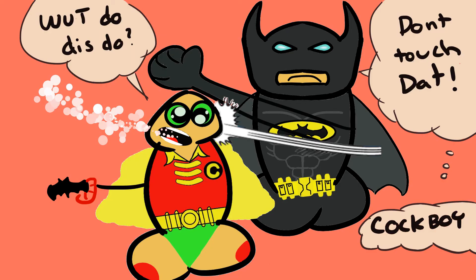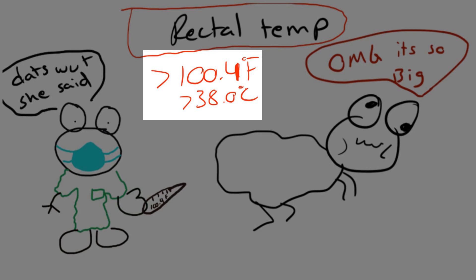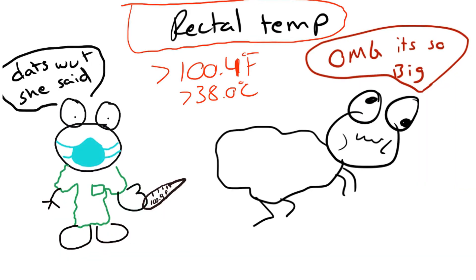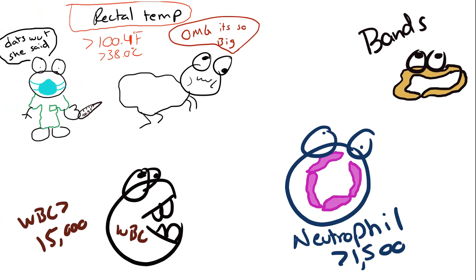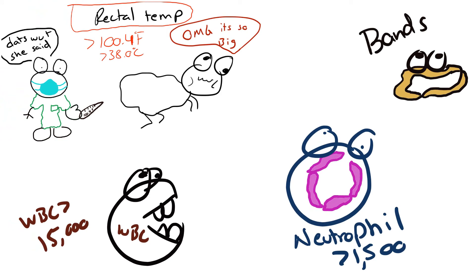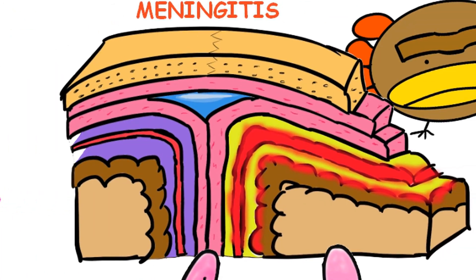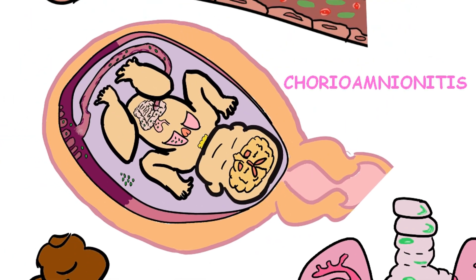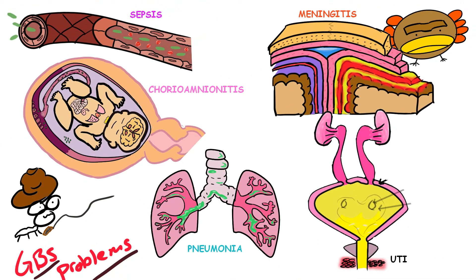The criteria for giving empiric antibiotics in newborns include: rectal temperature greater than 100.4°F (38°C), white blood cell count greater than 15,000, and neutrophil count greater than 1,500 with bands. They'll usually present with vague symptoms, and you want to do a panculture — blood, urine, and CSF — which should come back positive. The treatment for neonatal sepsis, neonatal meningitis, neonatal pneumonia, and chorioamnionitis is similar, depending on the most common organisms and whether it's early versus late onset.